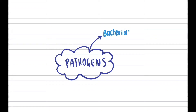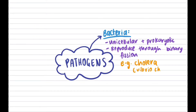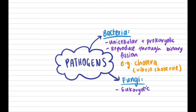Some pathogens include bacteria, fungi, viruses, protozoans, and prions. Bacteria are unicellular prokaryotic organisms which reproduce through binary fission and mutate very quickly, for example Vibrio cholerae. Fungi are eukaryotic organisms which can be unicellular or multicellular and reproduce through sexual or asexual methods.